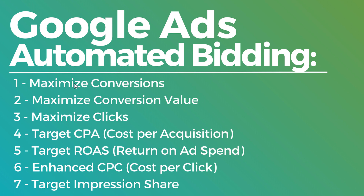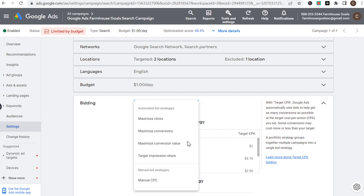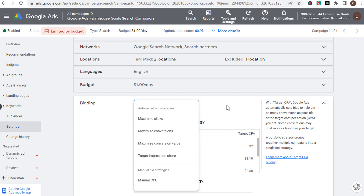These are listed in no particular order, but I'm going to go through each one today and then go through some best practices depending on the types of conversions you have and the type of campaign you're running. The easiest way to go through the bid strategies is to go to the portfolio bid strategies.